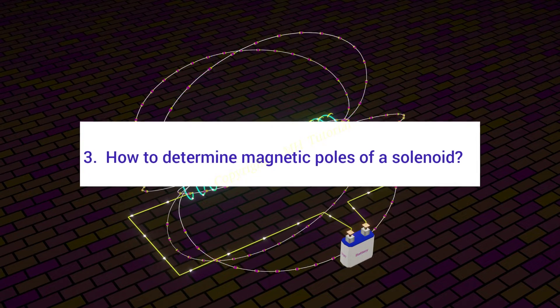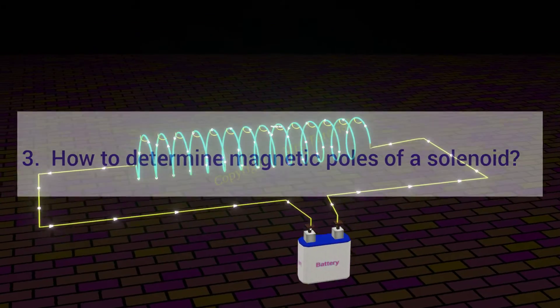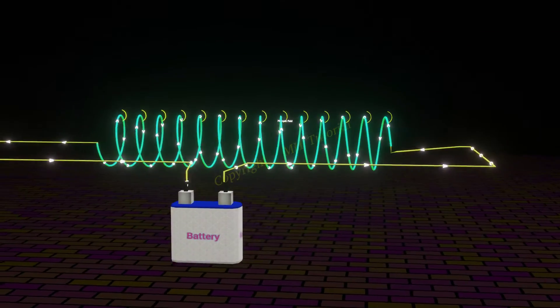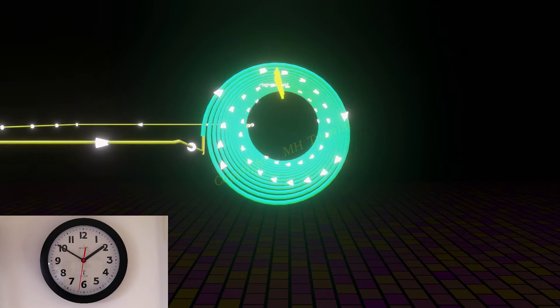Third question is, how to determine the north pole and south pole of a solenoid? If you look at the solenoid from one end, the current appears to rotate in clockwise direction.